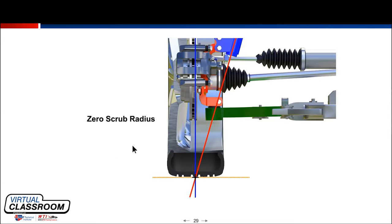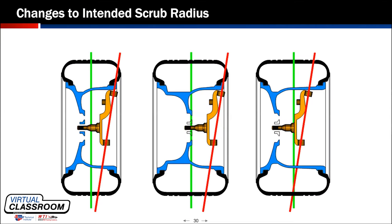Let's talk about what changes scrub radius unintentionally. This diagram shows it really well: with a stock tire and stock wheel offset, we see the tire center line meeting the road surface and the designed SAI angle coming down — that's our stock scrub radius. On the next picture, I've left the same amount of offset on the inside of the rim, which is typically pretty common because you have a ball joint or tie rod end in there and you can't shove the tire too far underneath.